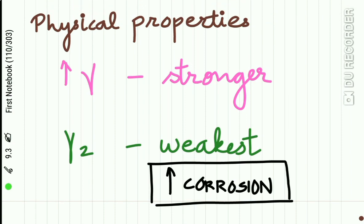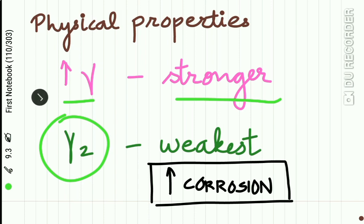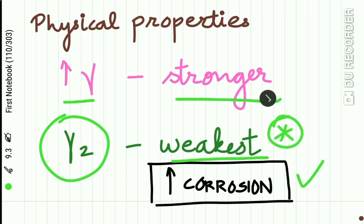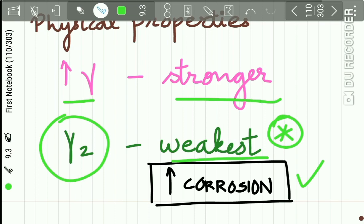The physical properties of the hardened amalgam depend upon the relative percentage of each phase. More unreacted alloy particles means a stronger end product. More gamma 2 phase means more corrosion, as this phase is very weak and leads to corrosion if present in large amounts.